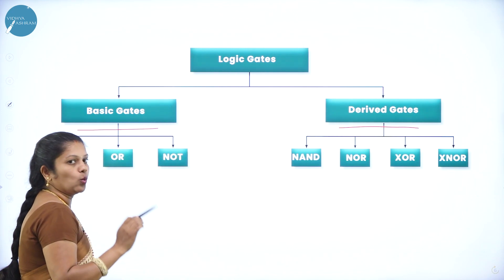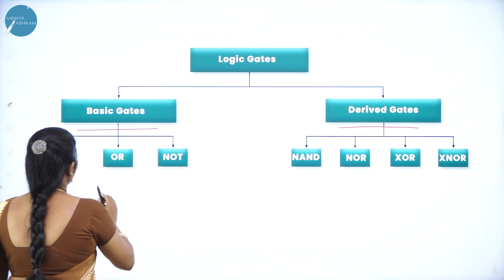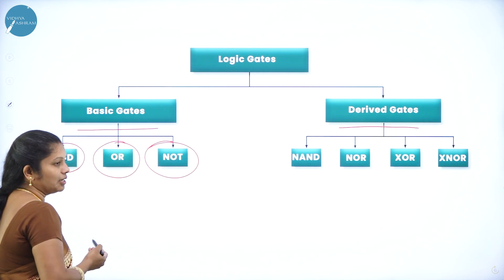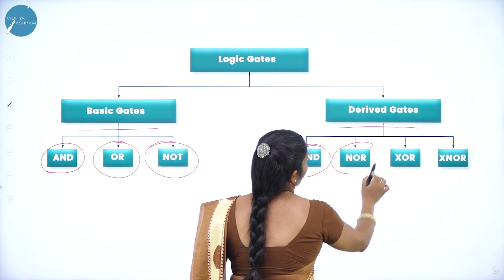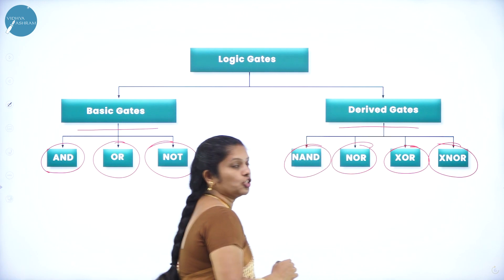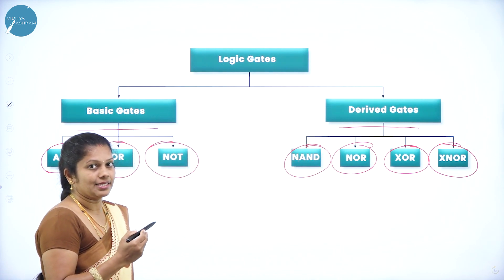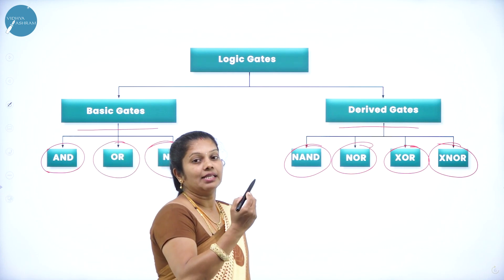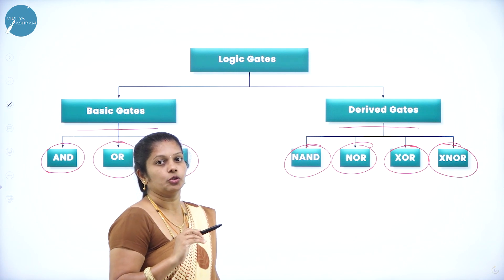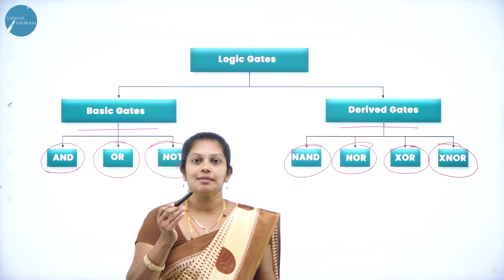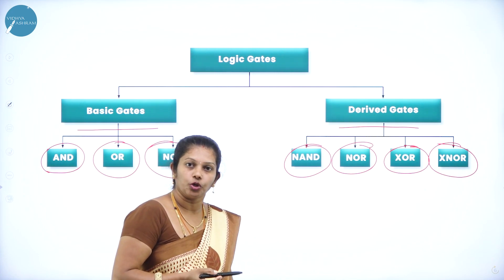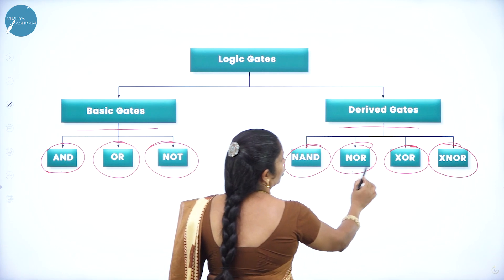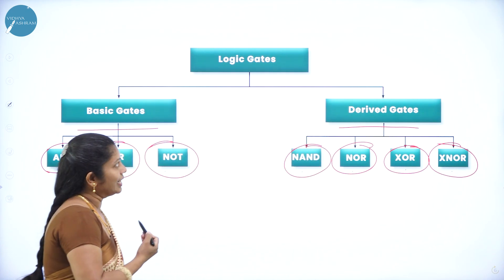There are two types of gates. Under basic gates, we have AND gate, OR gate, and NOT gate. Under derived gates, we have NAND gate, NOR gate, XOR gate, and XNOR gate — these are the four derived gates. In the exam they may ask: what are basic gates? List the types of basic gates, or what are derived gates? List the types of derived gates.